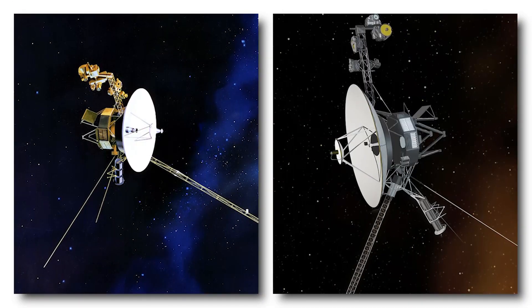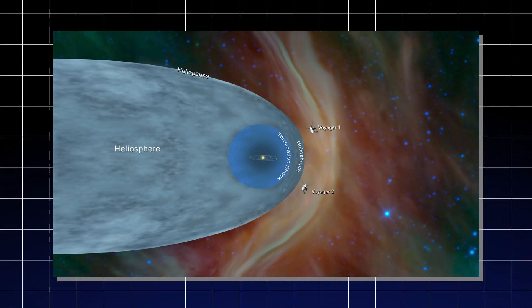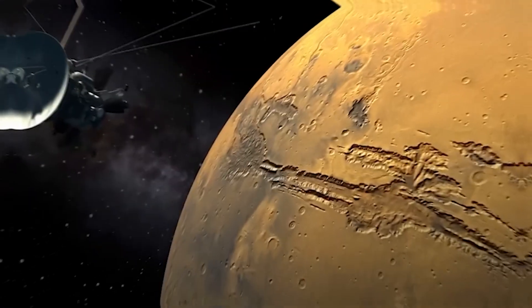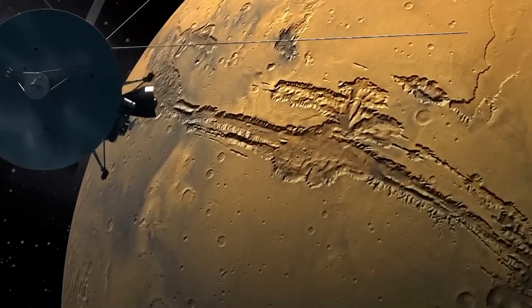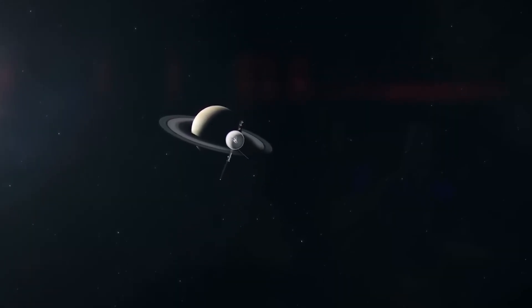Voyager 2, following its own trajectory distinct from its twin Voyager 1, approached this boundary from a different region of the heliosphere, revealing new and unexpected variations in its structure.